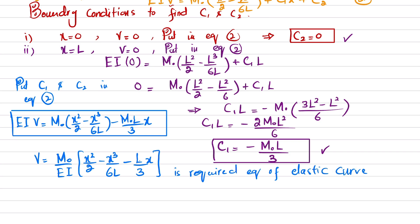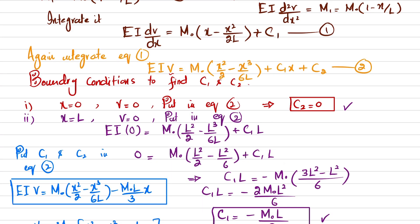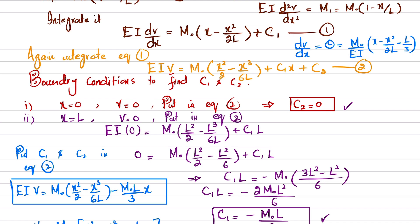The equation of slope is found from equation one with C₁ substituted: dv/dx = (M₀/EI)[x − x²/(2L) − L/3]. This is the equation of slope for the beam.